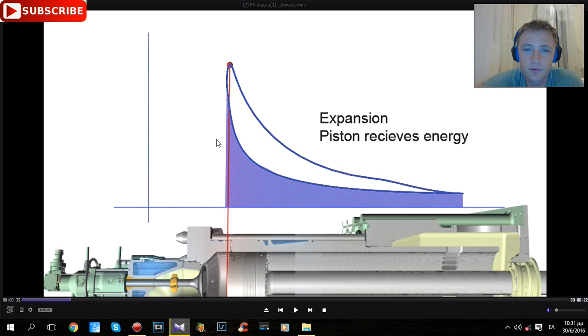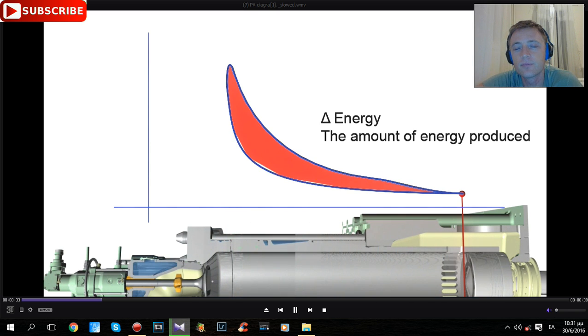After that, there is expansion which takes place after the explosion, and the piston receives energy. This is the energy that is produced inside the PV diagram, a closed diagram.